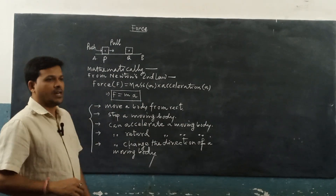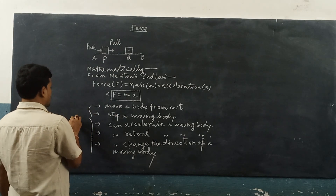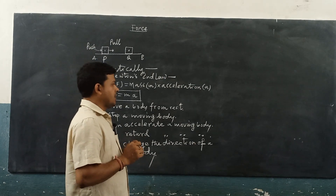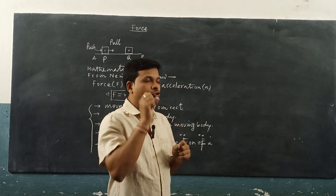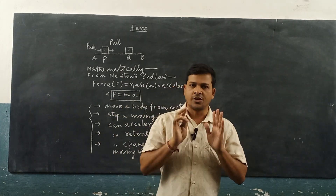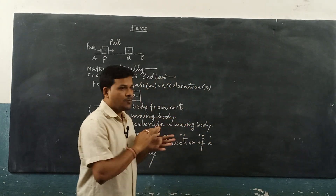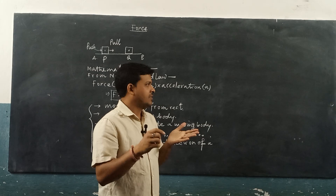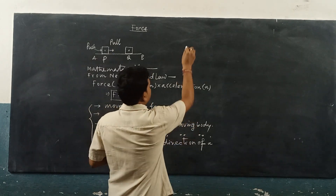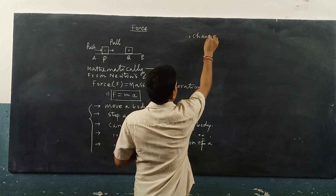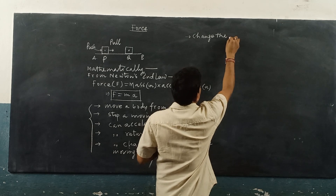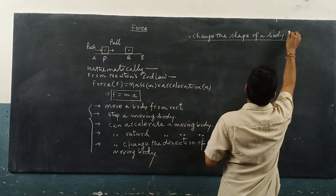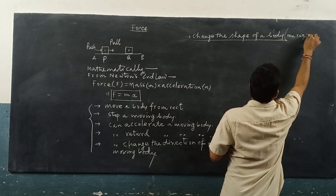These effects happen in the case of a rigid body. But in the case of a non-rigid body, like a tube of toothpaste — a new toothpaste tube is almost cylindrical in shape, but after use, the shape is no longer cylindrical. Its shape changes and it becomes thin and sheet-like. So force can change the shape of a body, but this happens only in the case of a non-rigid body.